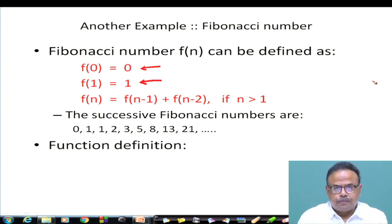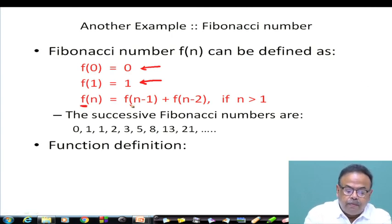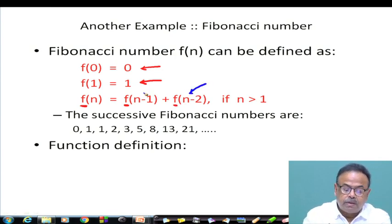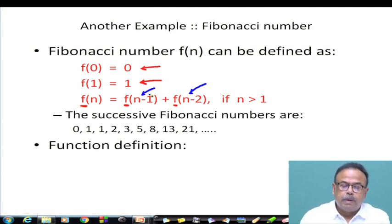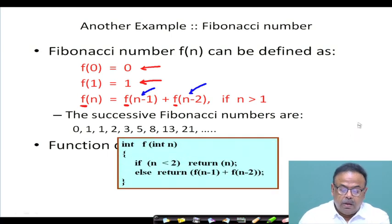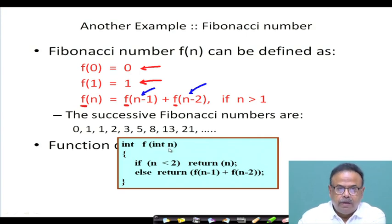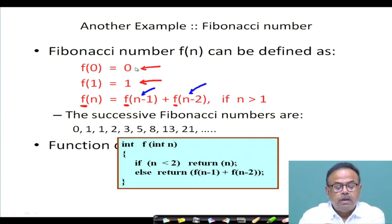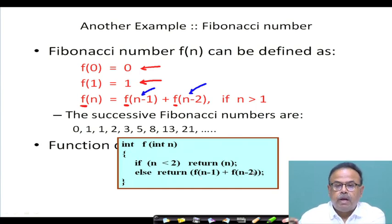We should be able to define Fibonacci in terms of a recursive function because the function F appears on both sides — only the parameters vary. So the function definition will be: F(int n) — if n is less than 2, return n (so if it is 0 return 0, if it is 1 return 1); otherwise return F(n-1) + F(n-2), the sum of the previous two Fibonacci numbers.